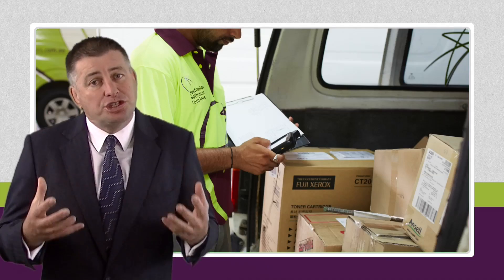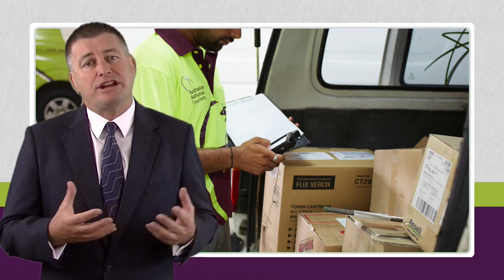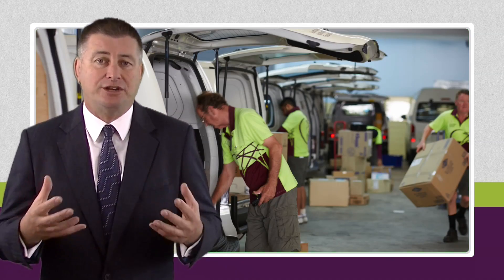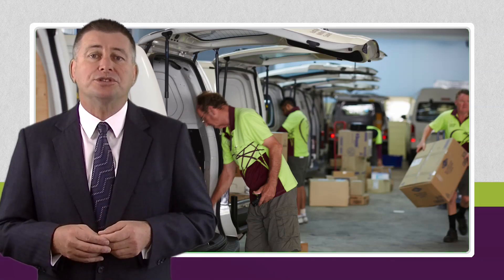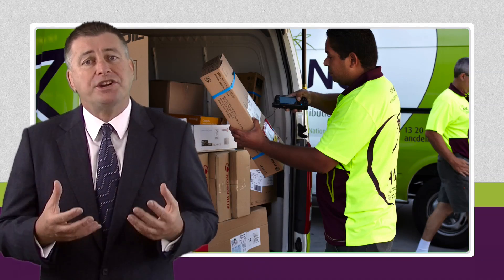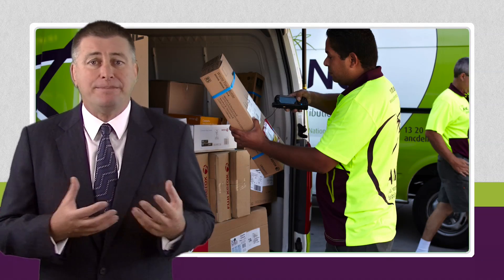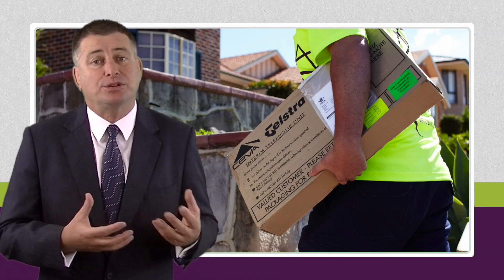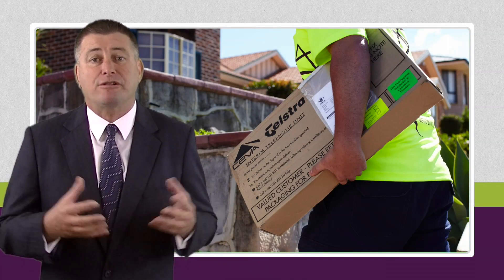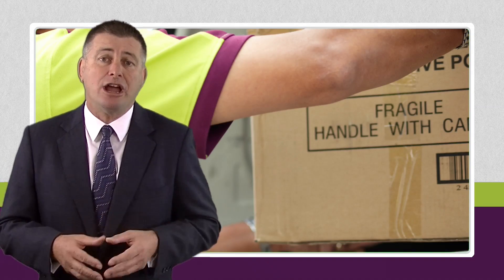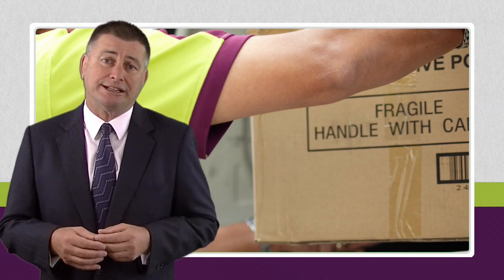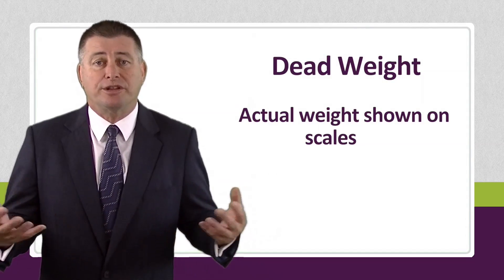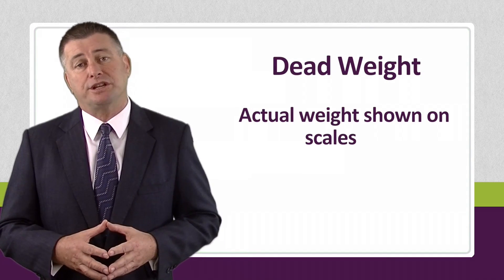Your typical parcel in a transport environment is measured via dead weight first. Why? Because the weight of a parcel impacts on the safety of the vehicle, being able to transport it in and around your local area, or secondly, by the amount of fuel that is used by the vehicle transporting it.